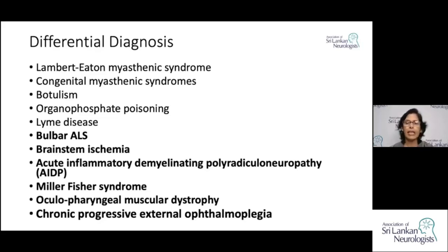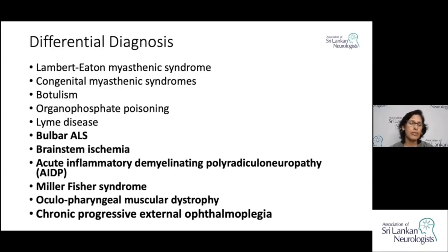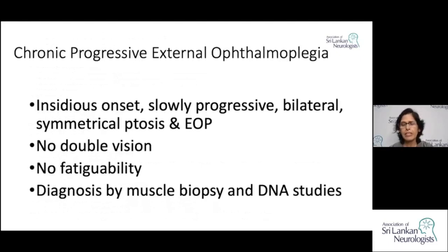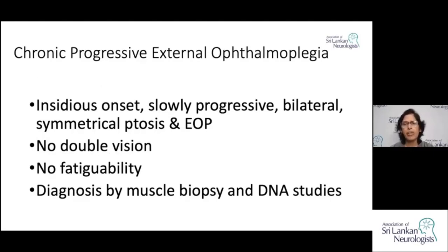Other differentials include Miller Fisher syndrome and oculopharyngeal muscular dystrophy. Chronic progressive external ophthalmoplegia (CPEO), a mitochondrial disorder, is important to distinguish — it has very insidious onset, slowly progressive bilateral symmetrical ptosis and external ophthalmoplegia without diplopia, and can be confirmed with muscle biopsy and DNA studies.